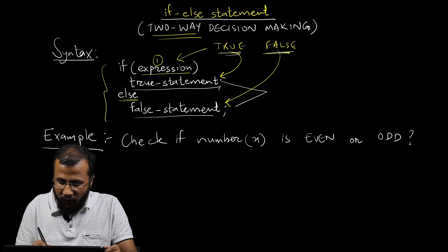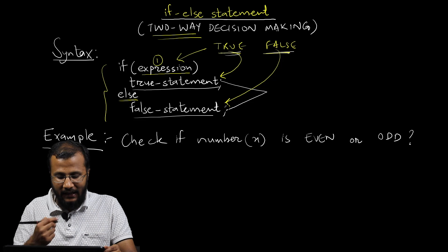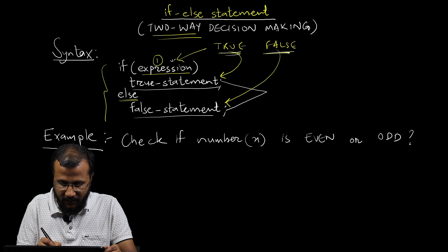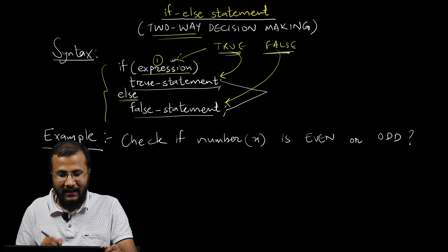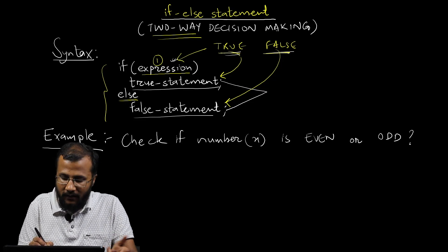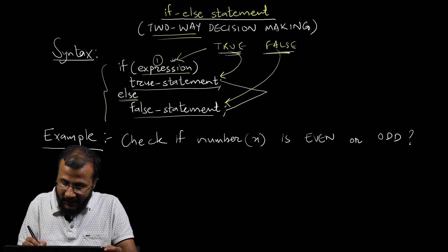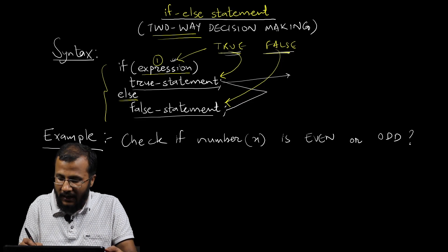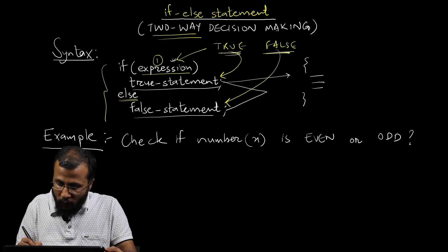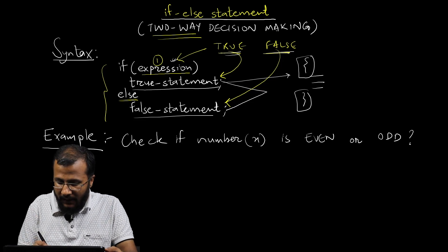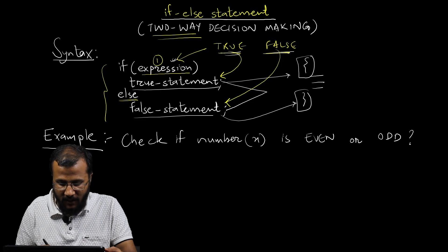The true statement and the false statement are mutually exclusive, meaning either one of these would be evaluated based on the output of the expression. It is called two-way decision making because it has two ways — the true statement if the expression is true, and the false statement if the expression is false. Instead of a single true statement, you can have a block or compound statement consisting of many statements enclosed inside braces, and likewise for the false statement.